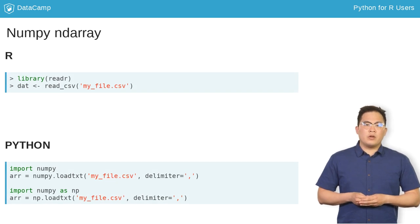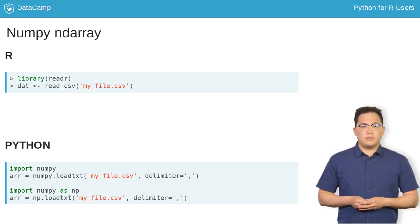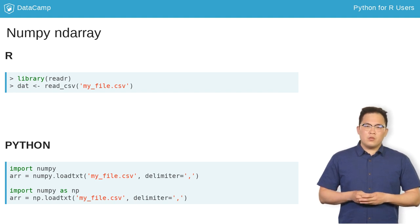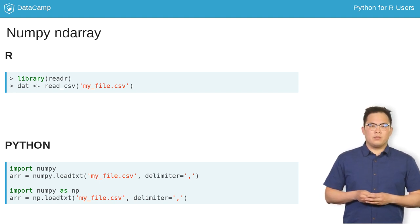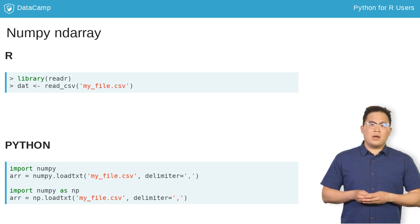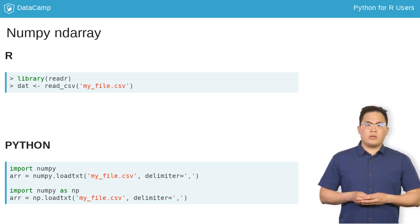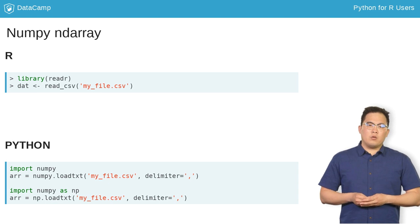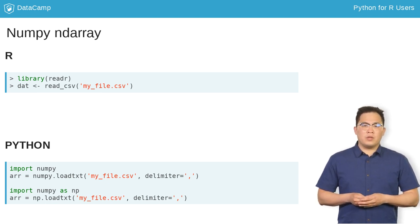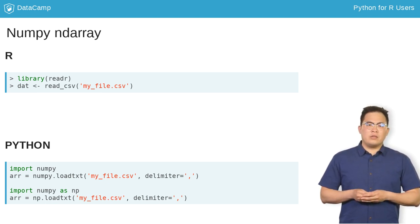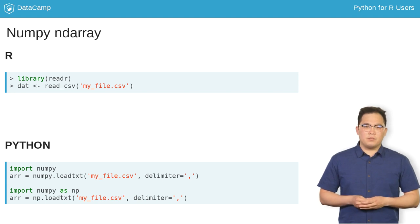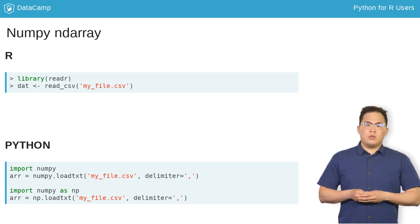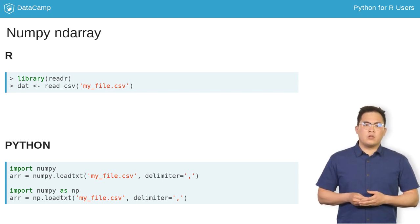When you load a library in R, you can use any of the functions from the library directly. Things work a little differently in Python. First, to load the NumPy library, you use the import keyword. In order to access any function from NumPy, you have to use numpy.functionName. For example, to use the loadText function, you call numpy.loadText.